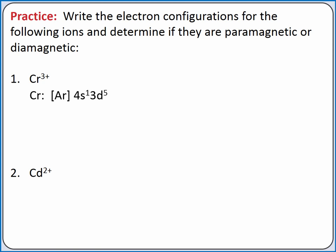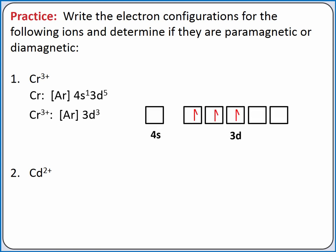Chromium is one of our exceptions, which moves one of the electrons from the s subshell and half fills the d subshell. To create the electron configuration for chromium 3+, we'll remove three electrons. We remove the one electron in the 4s subshell first and remove the other two electrons from the 3d subshell. If we create the orbital diagram for chromium 3+, we see we have three unpaired electrons. So chromium 3+ is paramagnetic.